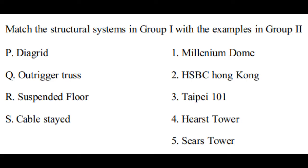Next question: match the structural systems in Group 1 with the examples in Group 2. The buildings in Group 2 are: Millennium Dome, HSBC Hong Kong, Taipei 101, Hearst Tower, and Sears Tower. The correct option is P4 — diagrid with Hearst Tower. Q3 — outriggered truss with Taipei 101. R2 — suspended floor as seen in HSBC Hong Kong. S1 — cable stayed structure as seen in the Millennium Dome.